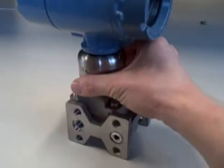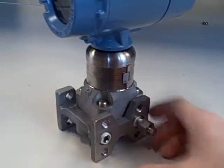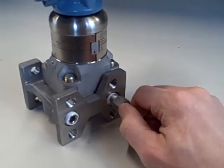Like all DP transmitters, this has high and low pressure ports where you apply fluid pressure. It even has a process vent right here, a bleed vent you can use to bleed off built-up pressure.